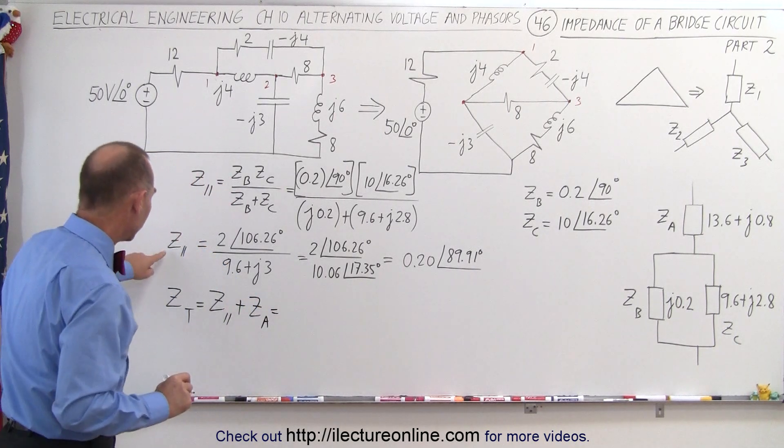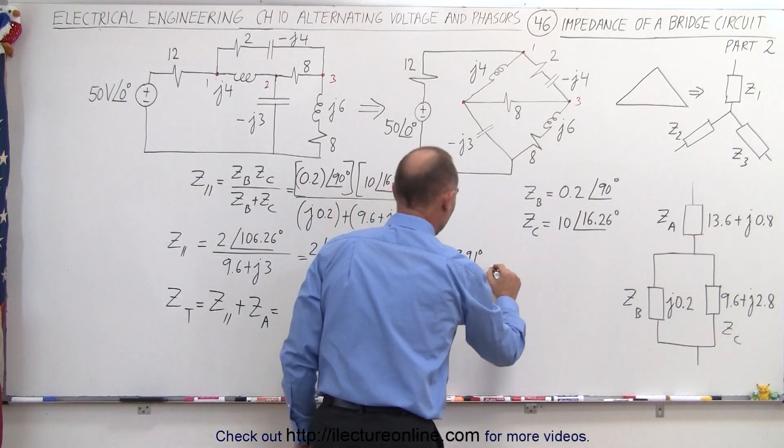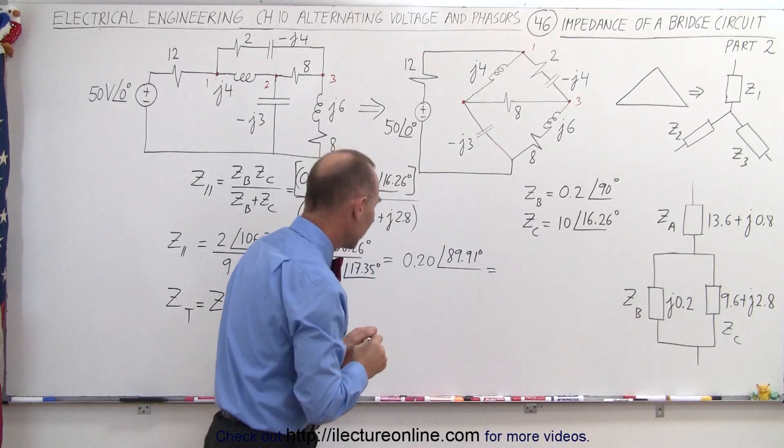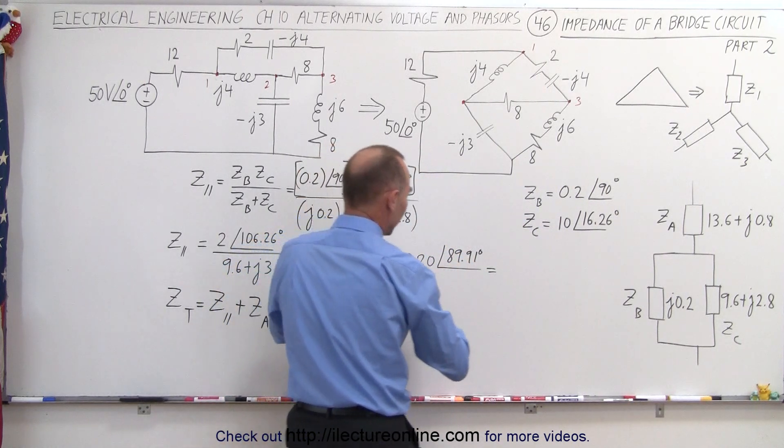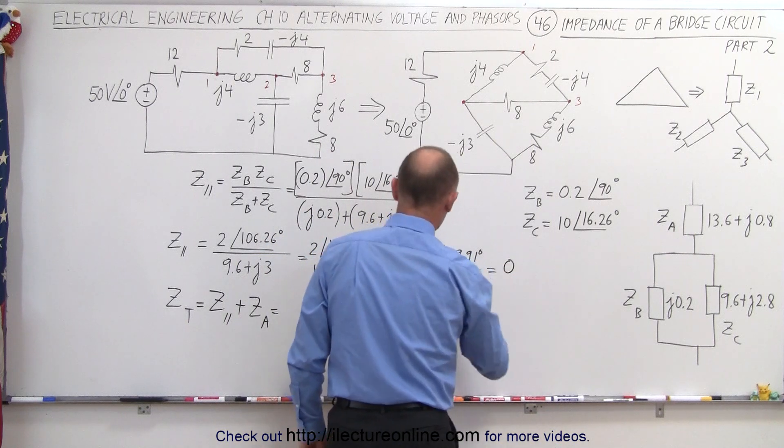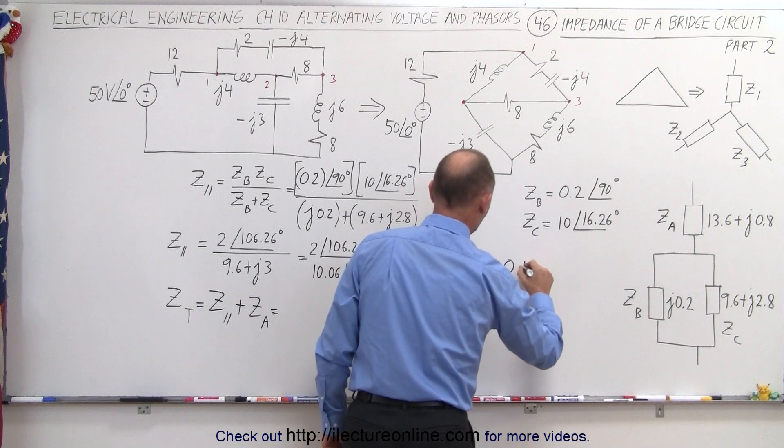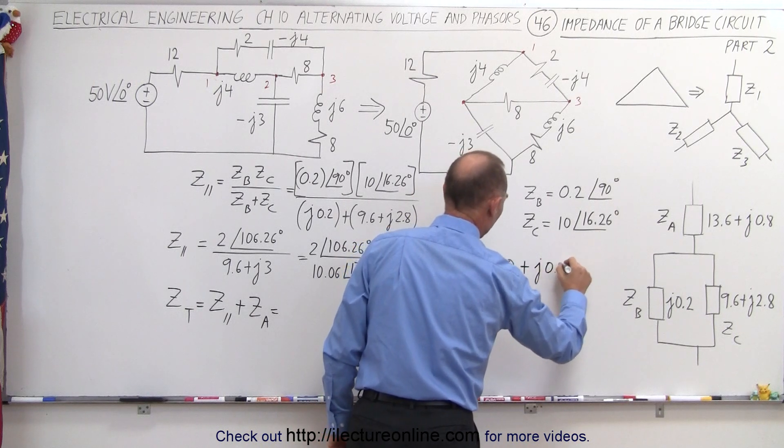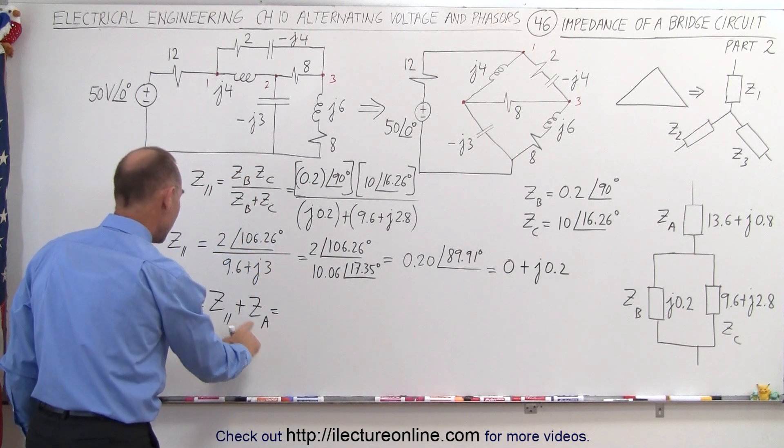Since we want to get that back into the format, we have the real imaginary part, we want to then convert this into the real imaginary part. Now, this is almost 90 degrees, that gives us basically a 0 cosine and a 1 for the sine, so that would be 0 plus j0.2.